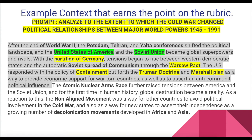'The US responded with the policy of containment through the Truman Doctrine and Marshall Plan, providing economic support for war-torn countries and asserting anti-communist political influence.' Right there you have the point for context in the LEQ or DBQ essay. If you want a complete explanation, add: 'The atomic nuclear arms race further raised tensions, and for the first time in human history global destruction became a reality. The non-aligned movement allowed other countries to avoid political involvement in the Cold War, and decolonization movements developed in Africa and Asia.' Any five bold terms explained correctly will likely earn the context point.